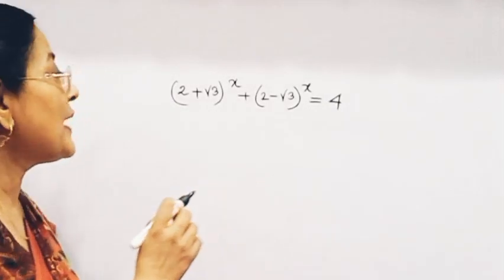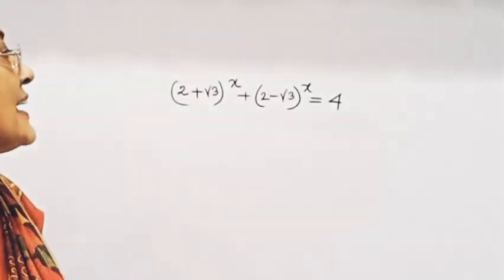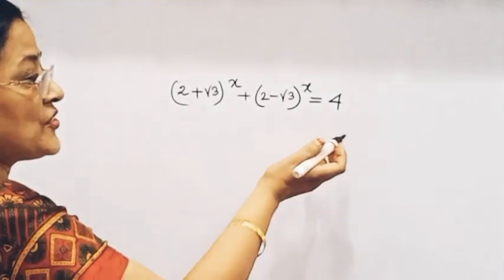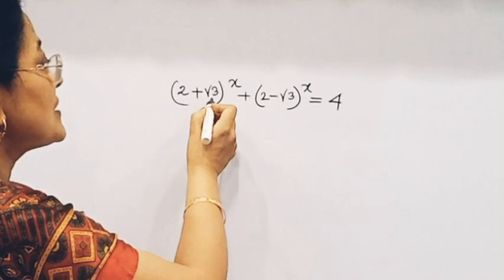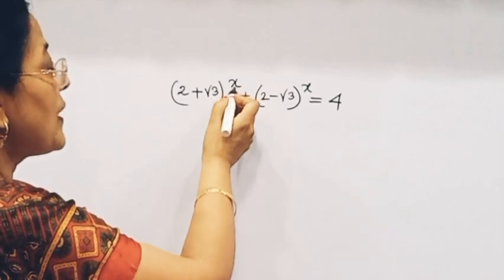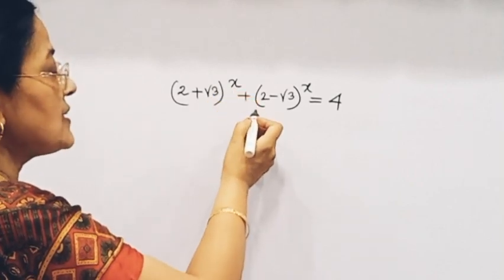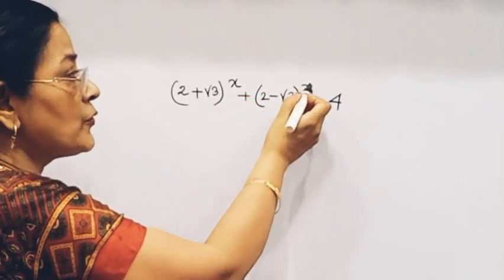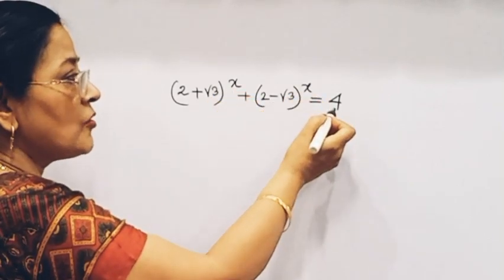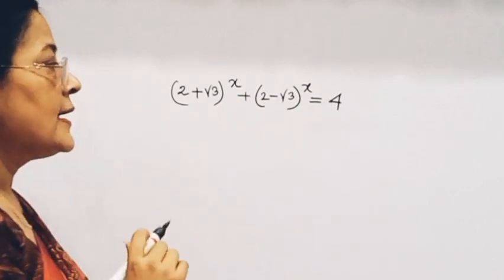If you find an exponential equation: (2 + √3)^x plus (2 - √3)^x is equal to 2.